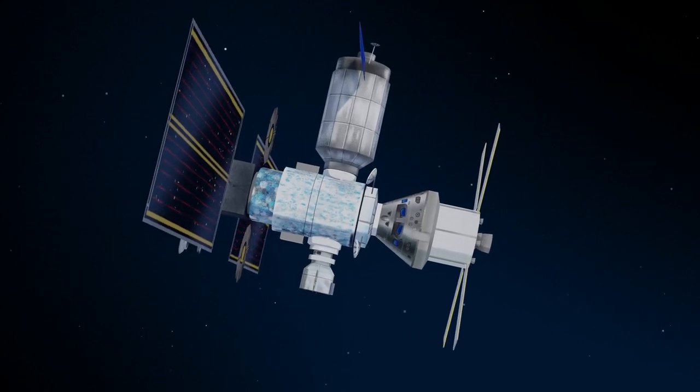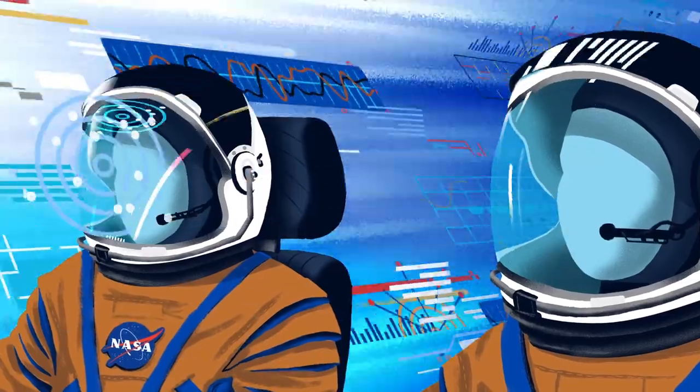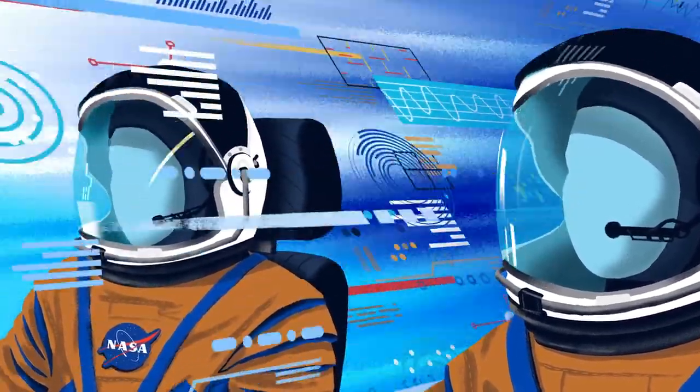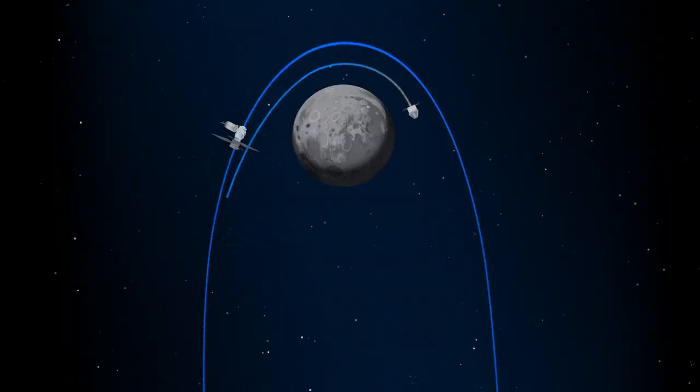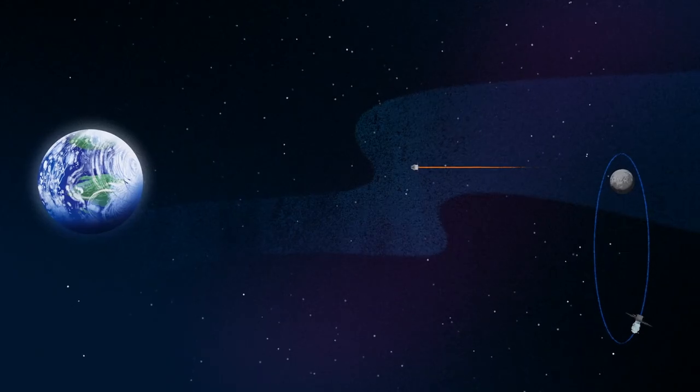Once back aboard the Orion spacecraft and undocked from Gateway, the crew fire their engine once to break out of the halo orbit, and once again to sling the spacecraft around the Moon, placing it on a multi-day trajectory back towards Earth.